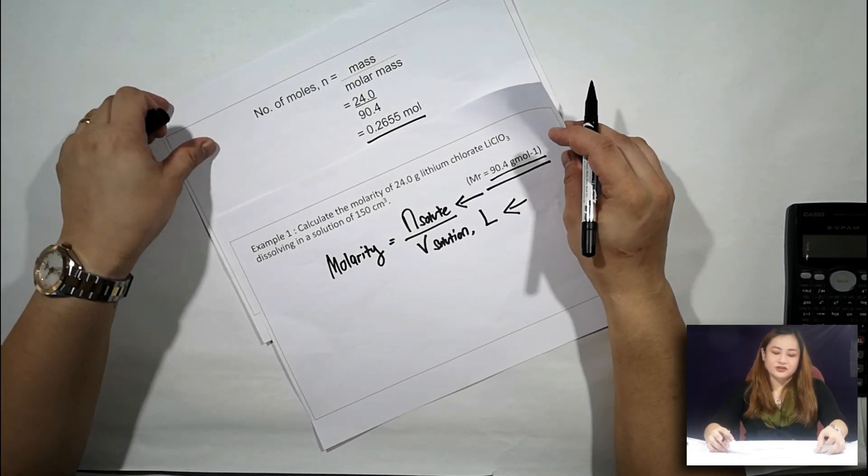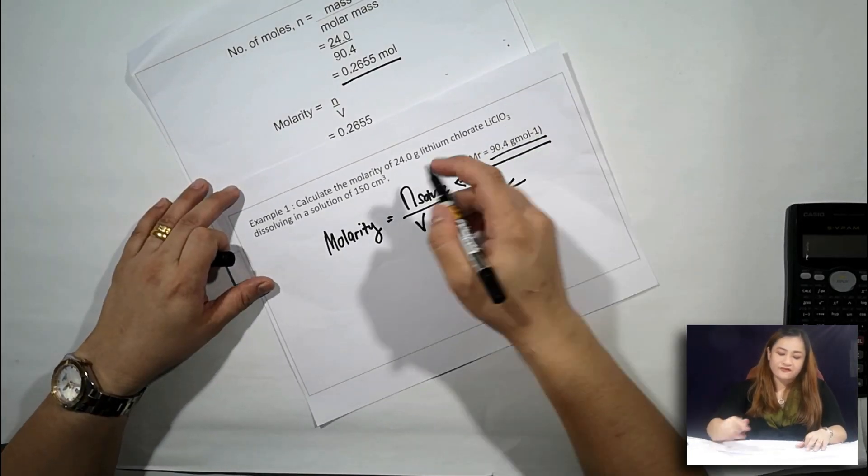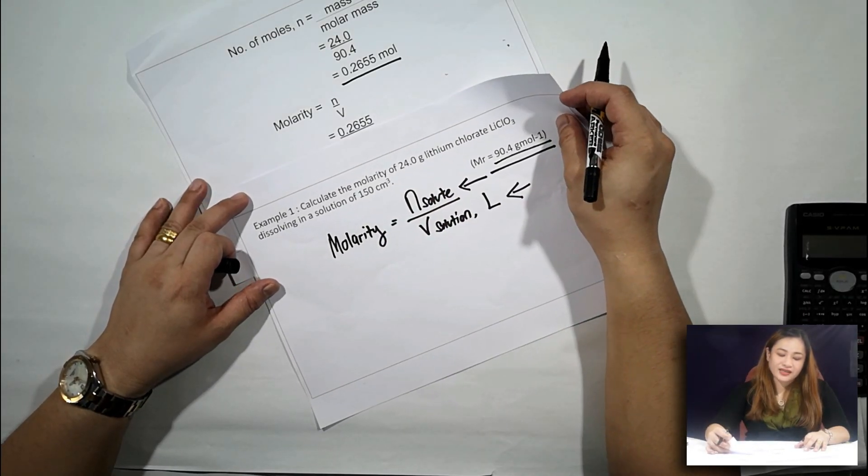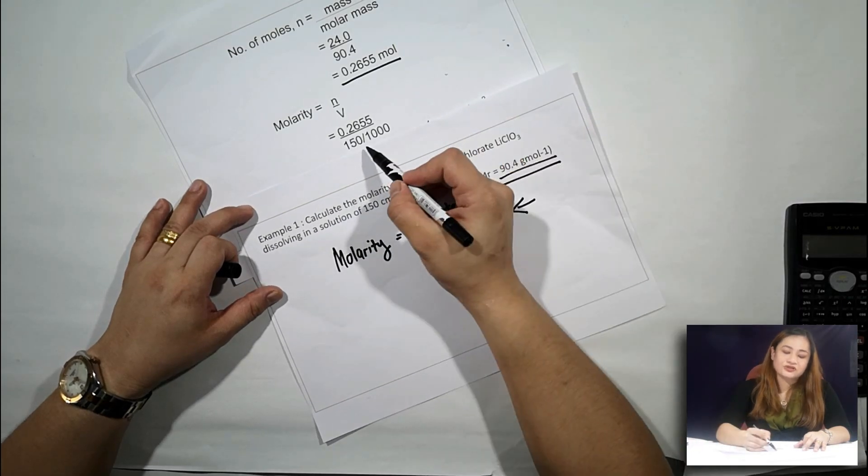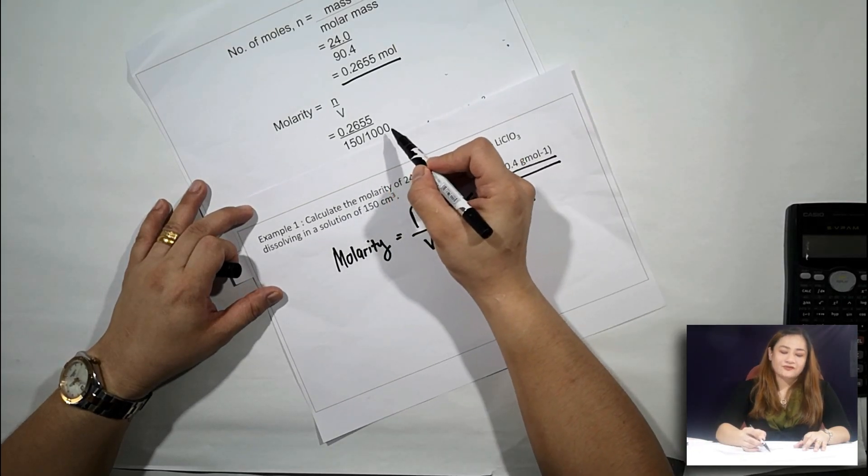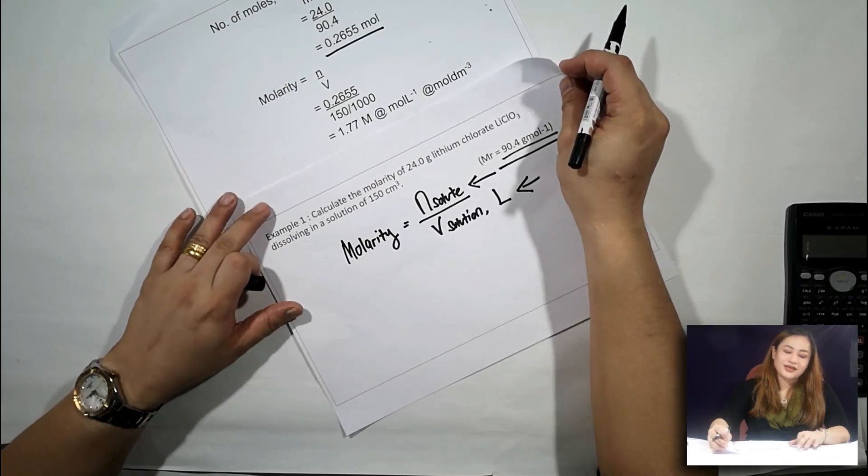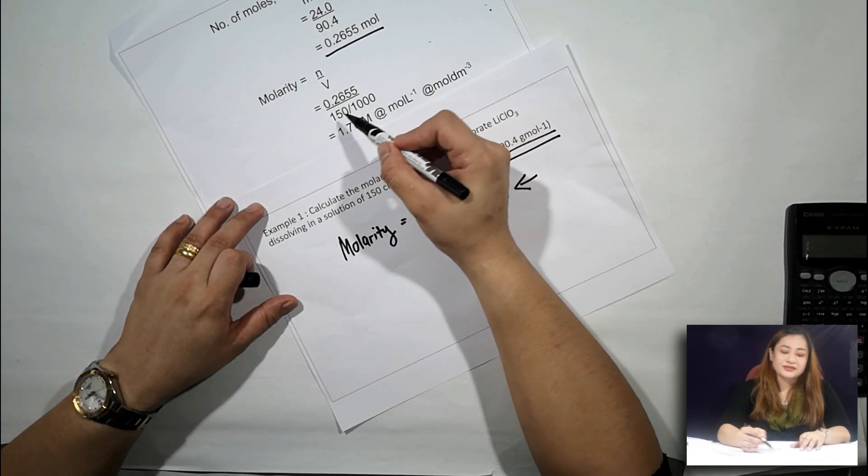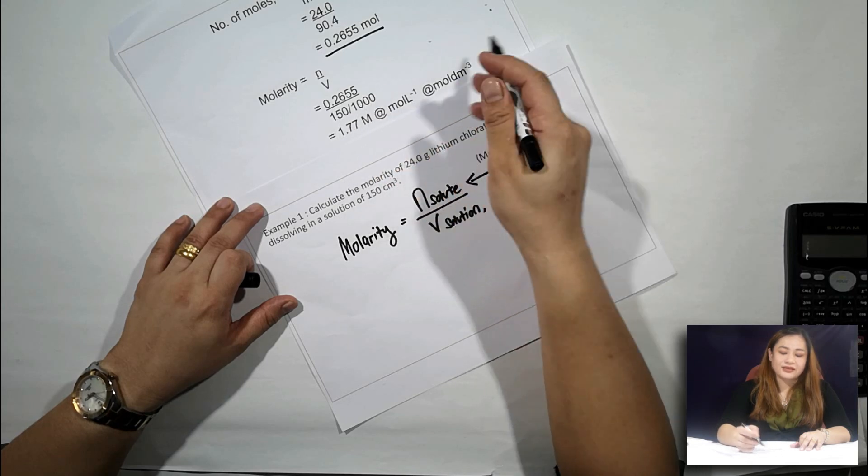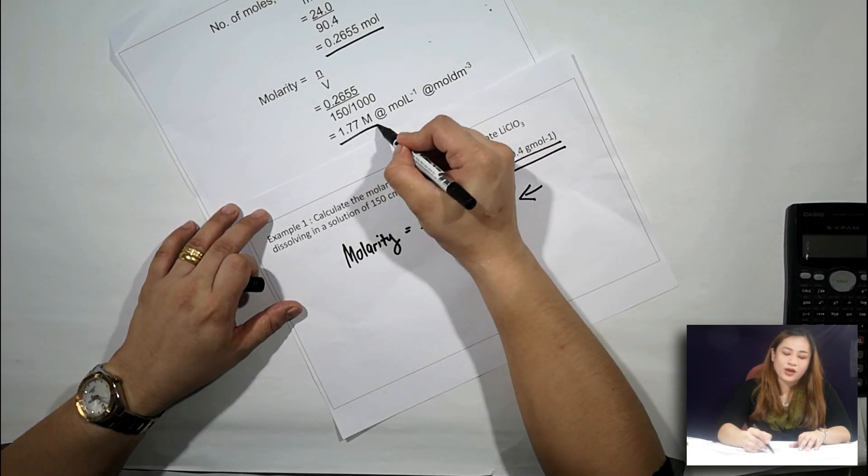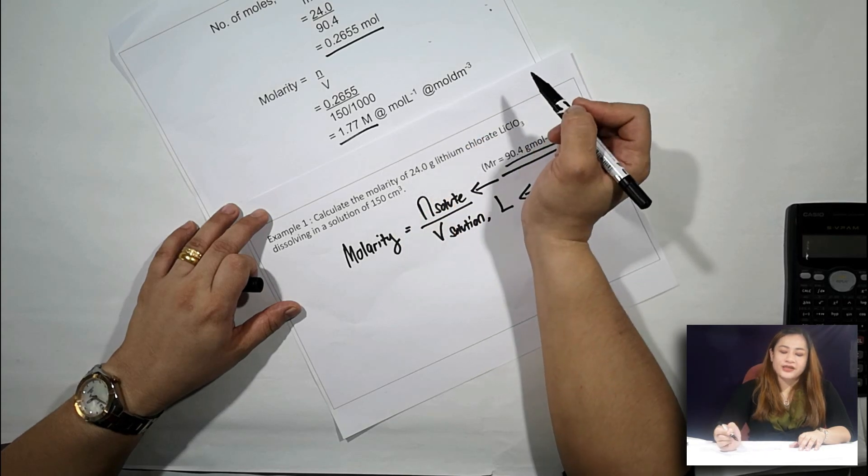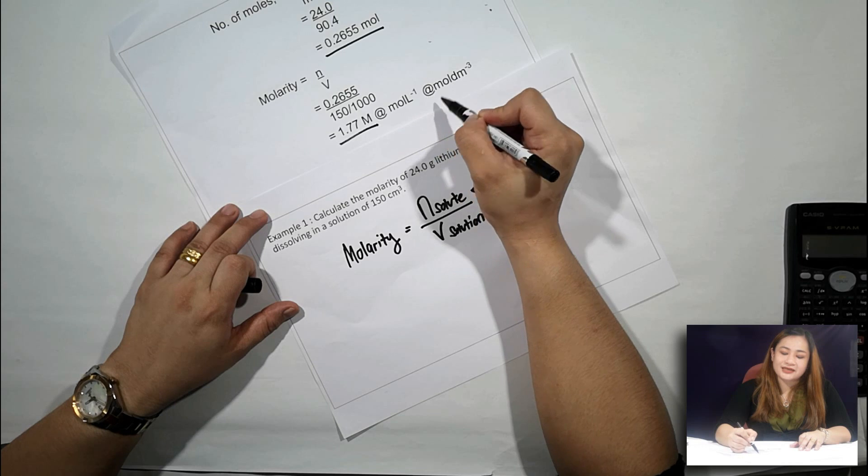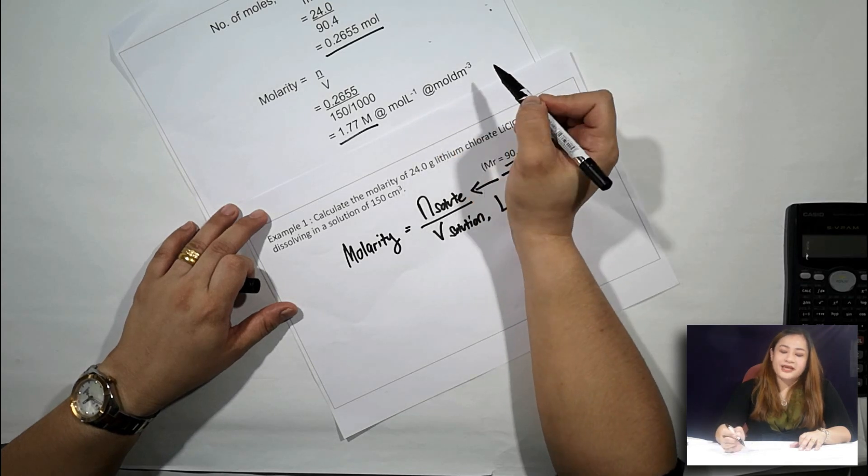And then for the solution, it's already given at 150 cm cubed, so convert it to liters. You need to divide it by 1000. So the molarity is 0.2655 over the volume of solution in liters, and the answer will be 1.77 M. The unit you can use M or moles per liter or moles per dm cubed.